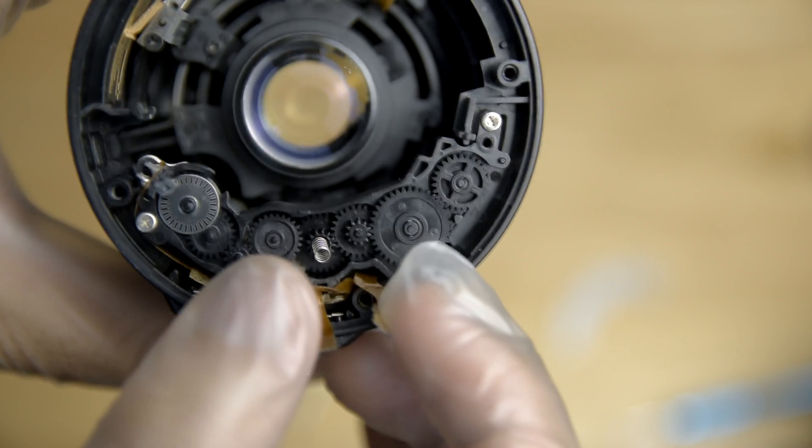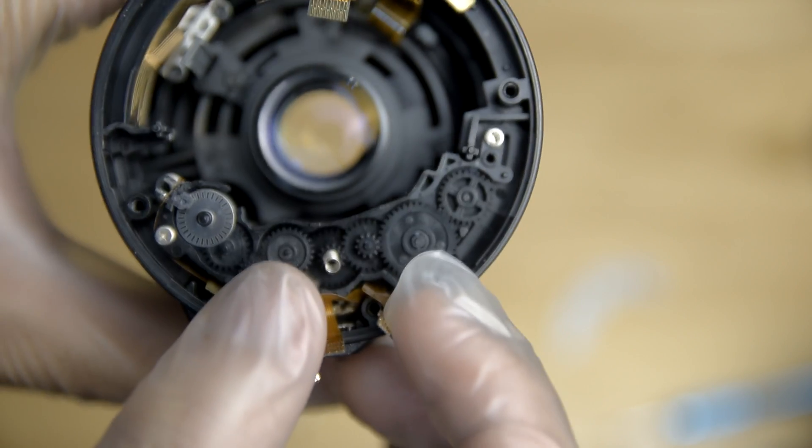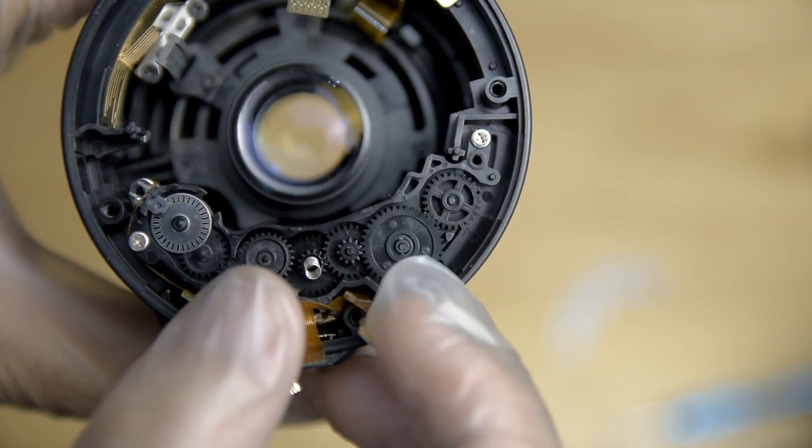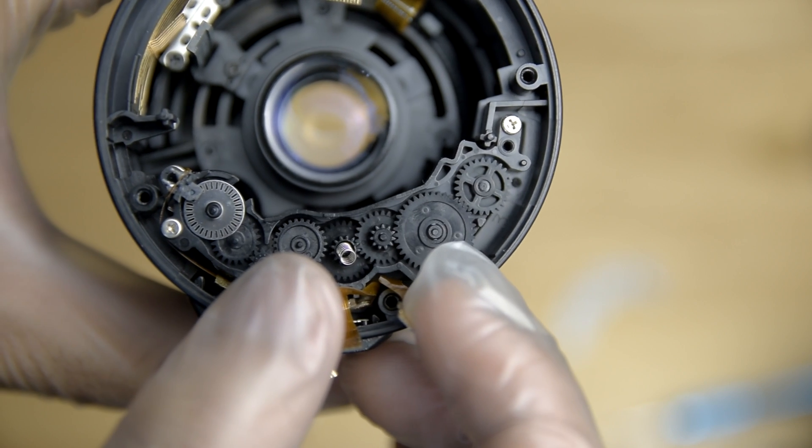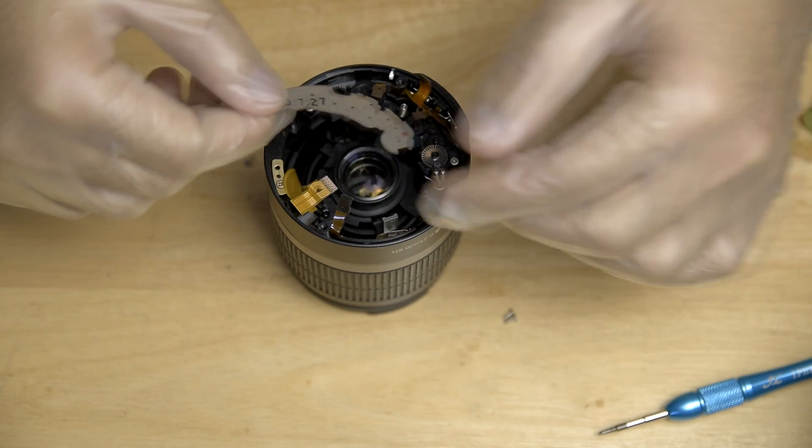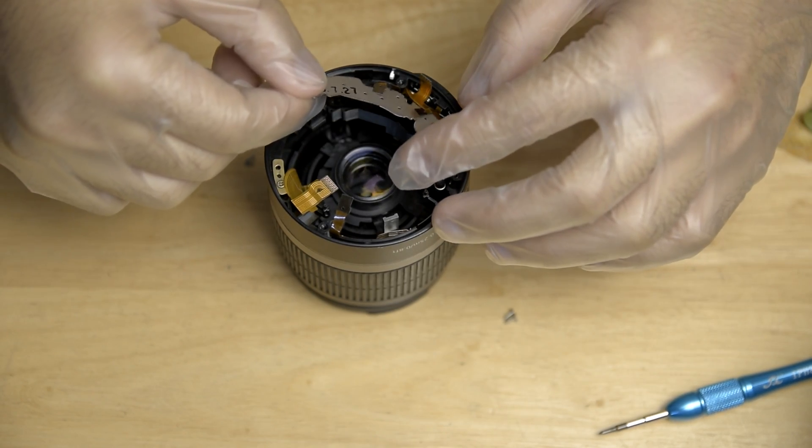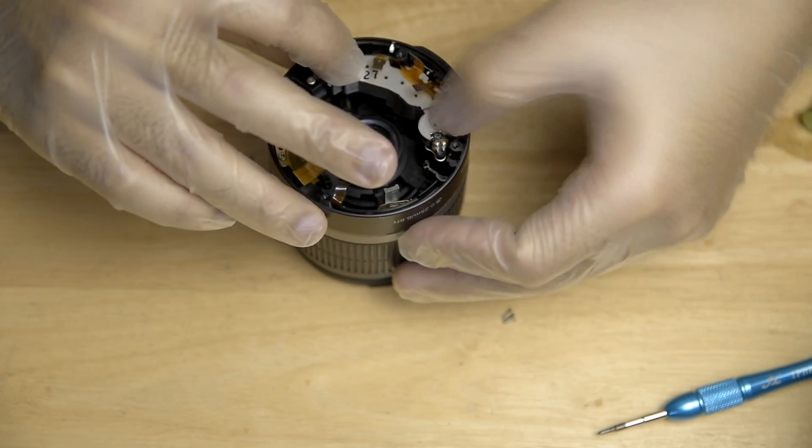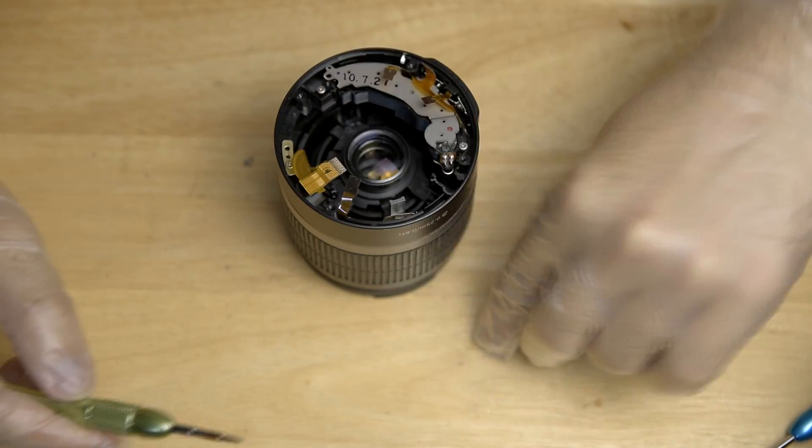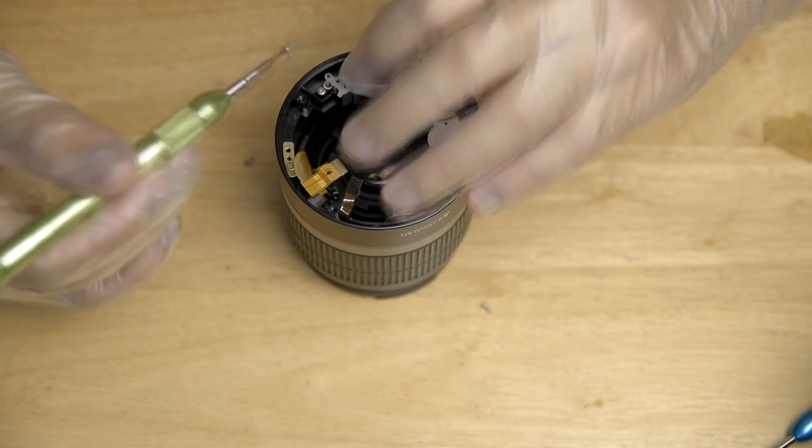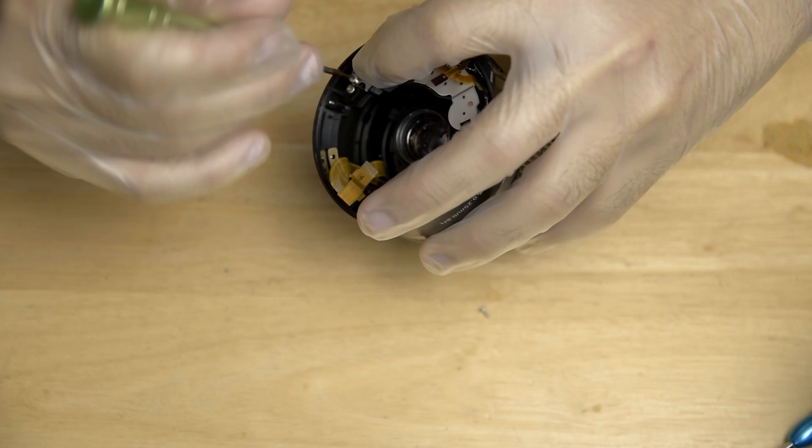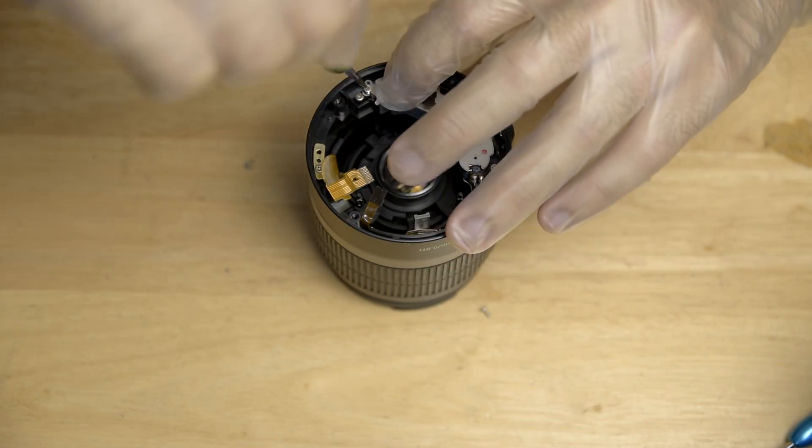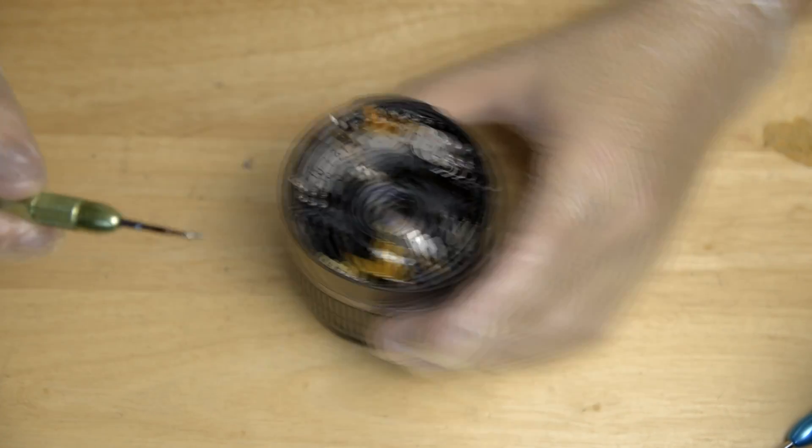After inspecting the gears and you see that there's nothing wrong with it, you can now put back the cover because we will be removing the entire autofocus module to check the autofocus flex cable. And remove the module by removing the two screws just beside the screws of the cover.